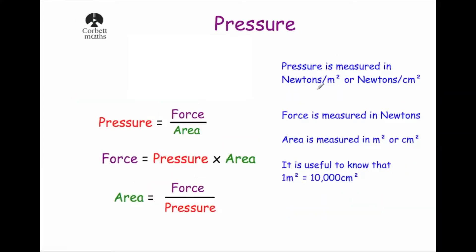Pressure is measured in newtons per metre squared or newtons per centimetre squared, depending on the context of the question. The force is measured in newtons, and the area is usually measured in metres squared or centimetres squared. It's useful to know that 1 metre squared is equal to 10,000 centimetres squared, as we'll often need to convert between the two.